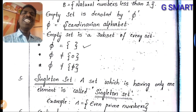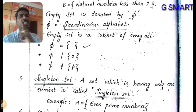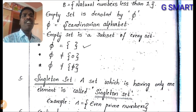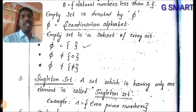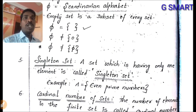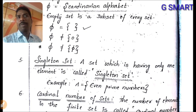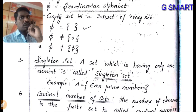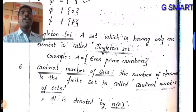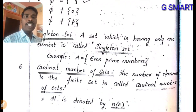Singleton set: a set which has only one element is called a singleton set. Example: even prime numbers — there are many prime numbers, but only one even prime, which is 2.